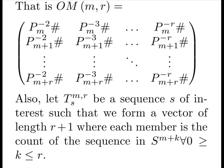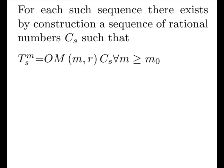And here we have an example. We're starting at some M0, and it's R going up by R in the other direction. Also, let T of S at some M and R be a sequence S of interest, of gaps, such that we form a vector of length R plus 1, where each member is the count in some particular model. That is, we're going to walk through at some M0, pick out a sequence, and count how many we have. And then we'll count how many we have in the next iteration, and the next iteration, and so on. For each such sequence, by construction, there exists a sequence of rational numbers, CS, such that OM times CS is equal to our type count for every M greater than or equal to our start condition.